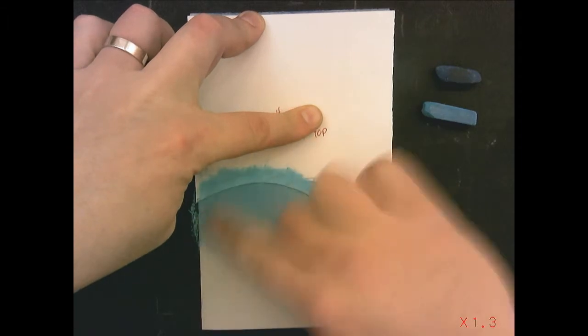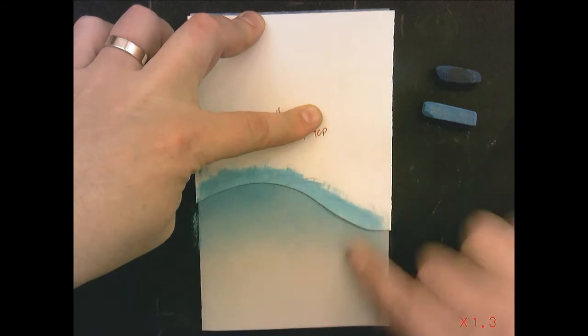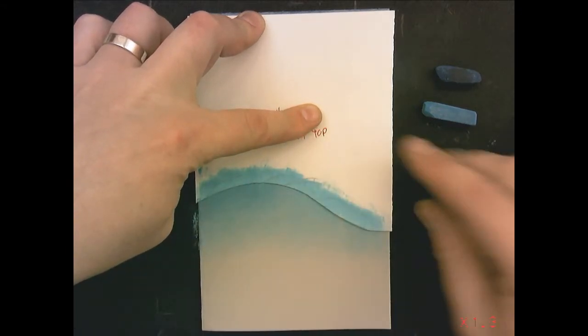Use a clean finger or a tissue, clean part of the tissue. And we blend it out just the same way that we did stencil number two. Ooh, look at that. It's looking good.